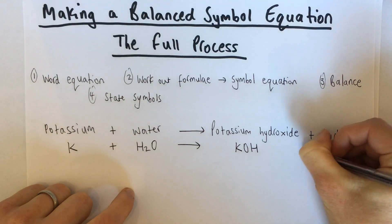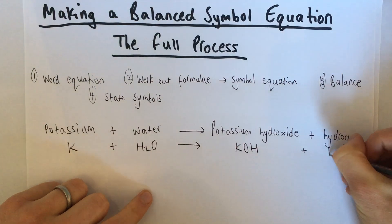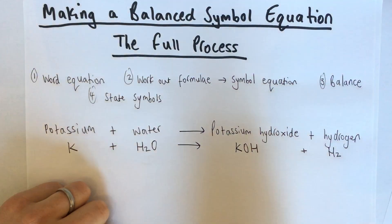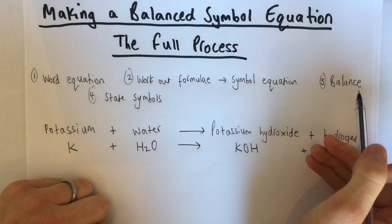And then for hydrogen, we need to remember that hydrogen is a diatomic gas. So it's going to be H2. Okay, we've got our correct formulae. So we've got a symbol equation. We now need to balance it.